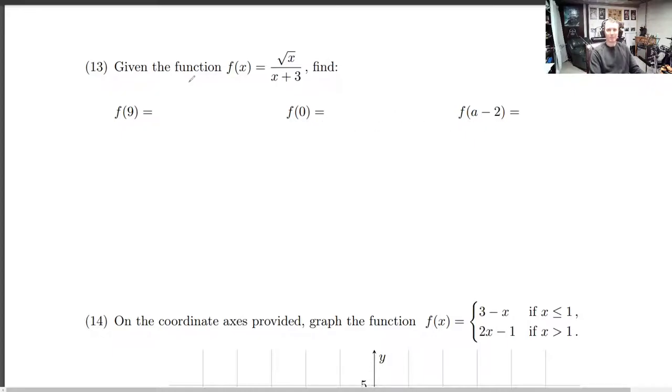Okay, so these ones not so bad. Remembering function notation, this here just says your variable is an x. There's one variable and it's x. So this 9 is taking the place of the x, which means we're plugging in 9 for every x. This is equal to the square root of 9 divided by 9 plus 3. We're just plugging 9 in.